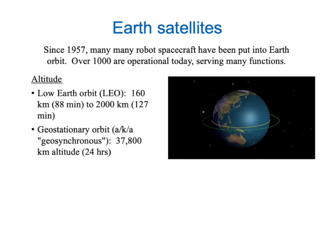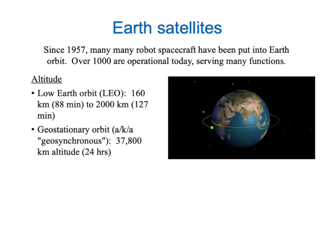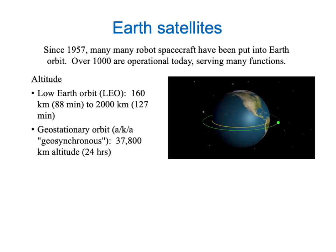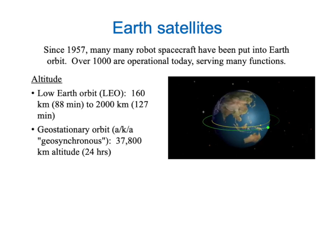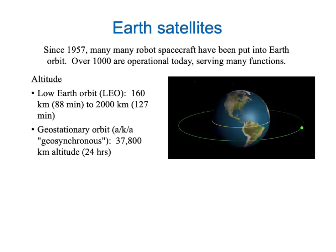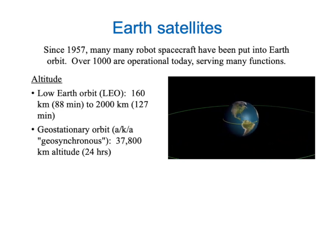The first important orbital characteristic is altitude. How high is the satellite above the surface of the Earth? If the orbital radius is not much larger than the radius of the Earth, we call this low Earth orbit, from the Kármán line at the edge of the atmosphere out to about a 2,000 km altitude. These satellites orbit the Earth several times a day, but the larger the orbit, the longer the orbital period.